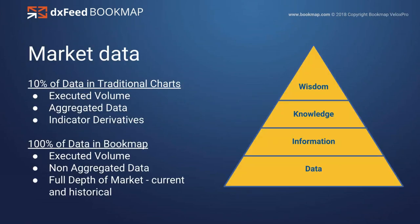Let's talk about some of the market data with DXFeed Bookmap and why the data is important — it's going to make a big difference. Most traditional charts that we look at, like candlestick charts, Renko charts, or point and figure charts, show aggregated data. You're basically looking at only executed volume — really just about 10% of the data that's in that candlestick or bar: open, high, low, and close.